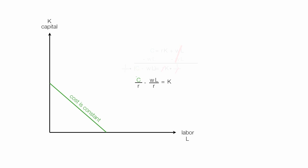Cost is constant, so a lot of times you'll see a line put over the top of C — that's what that means. Frequently it's written as K equals all this. Let me rewrite that part of the equation a little differently, so it becomes negative W over R times L.